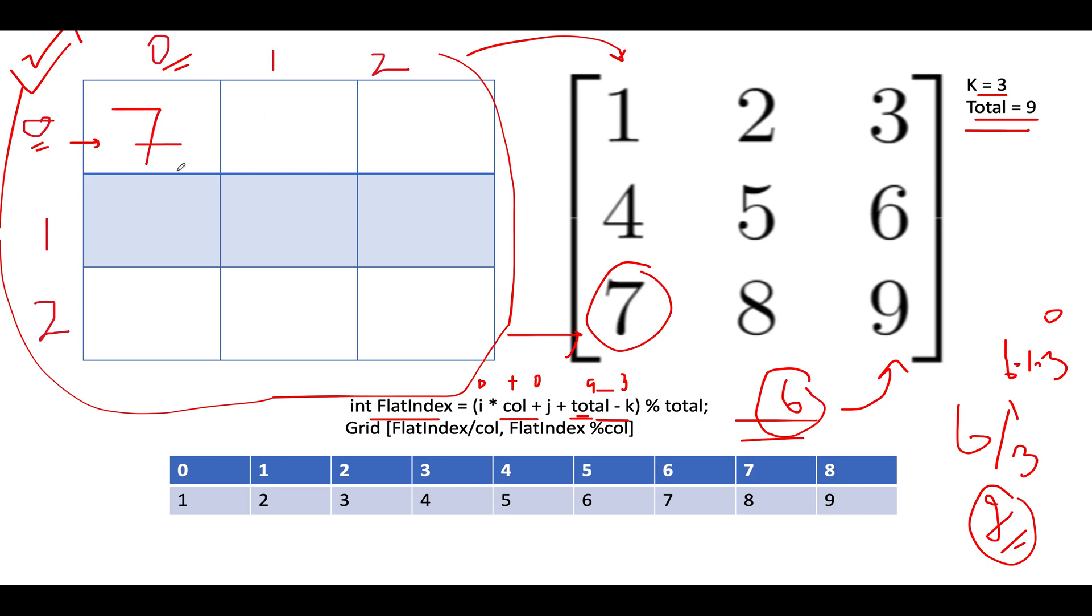It's in sync with our expectation. And now let's fill up the rest of the elements of our output grid. So next we will look out for 0, 1. And let's apply this flat index formula. So i is 0, j is 1.